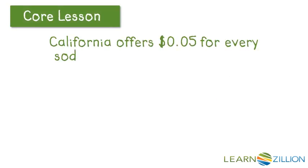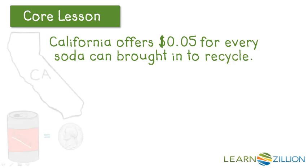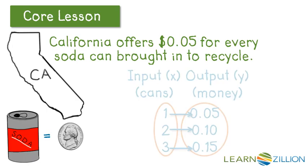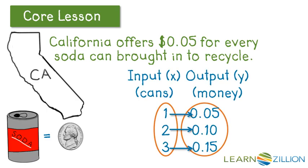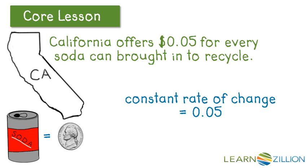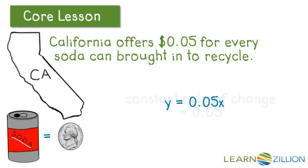So California offers 5 cents for every soda can brought in to recycle. The input and output are shown below. And for every can brought in, 5 cents more is given as recycling money. So the constant rate of change here is 5 cents. Every time you bring a can, one more can, it gives you 5 more cents. So an equation for that could be y equals 5 cents times x.